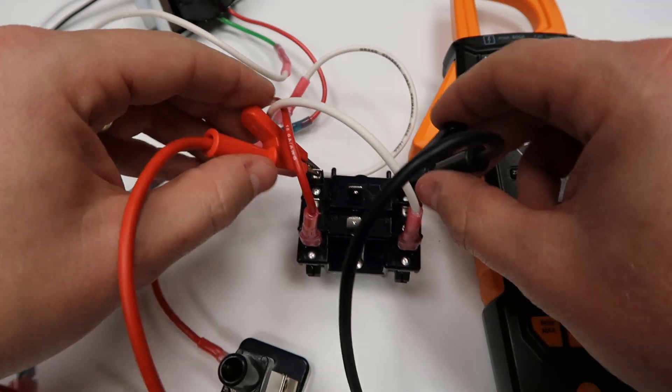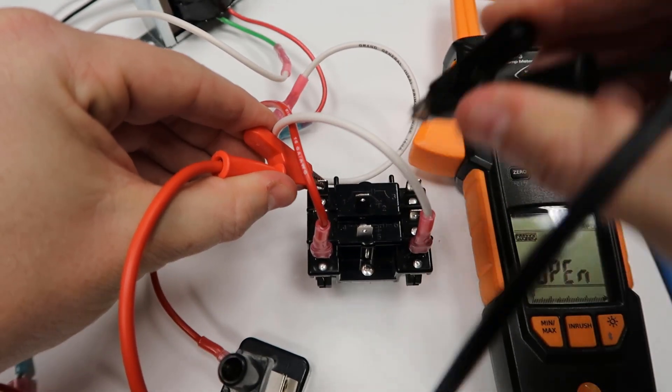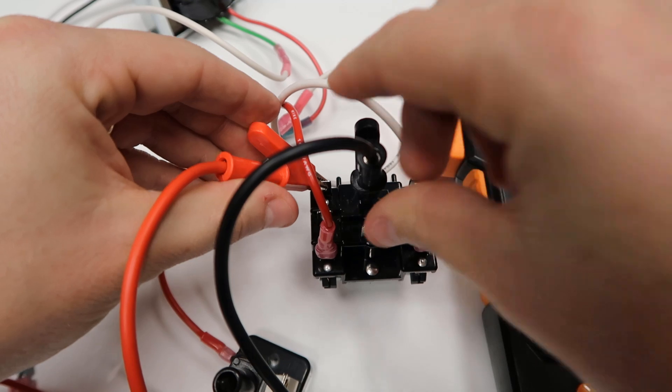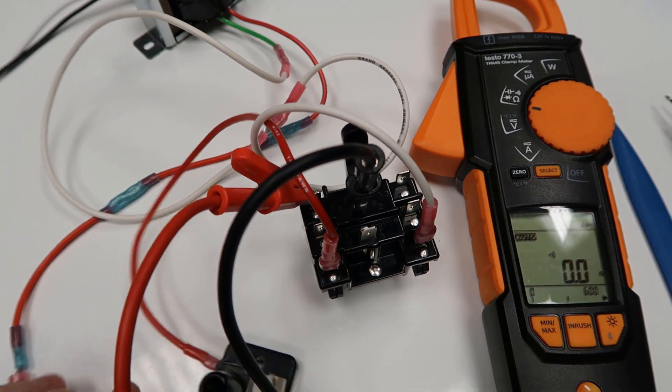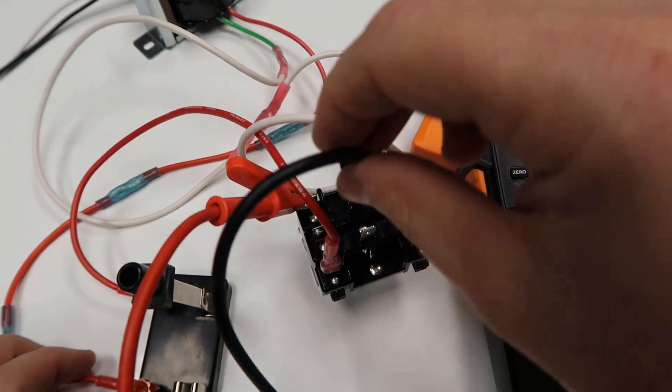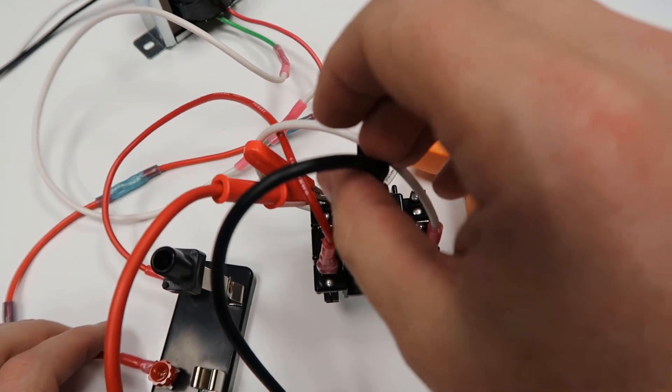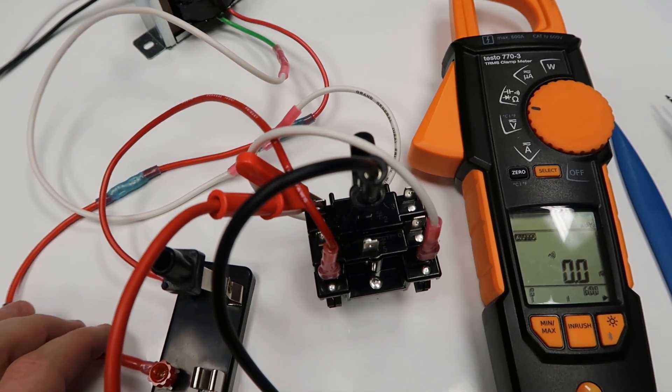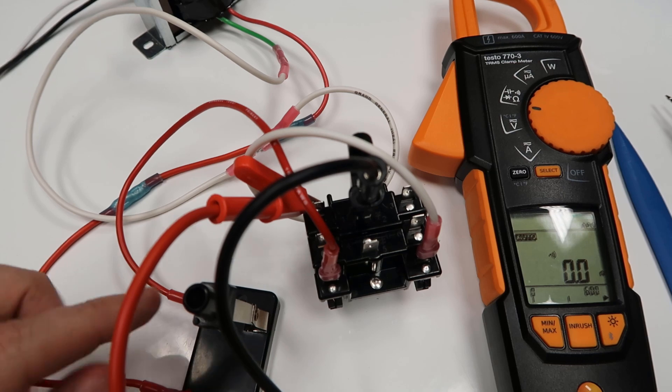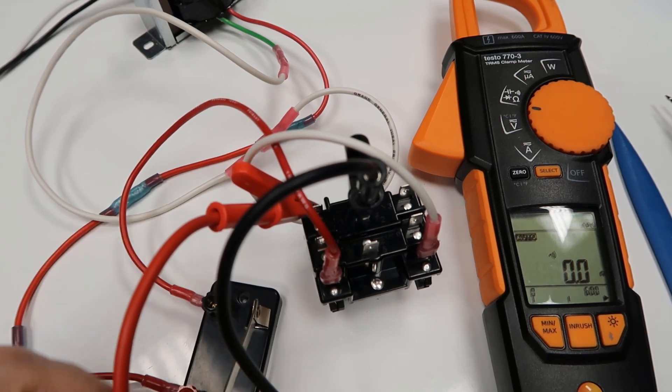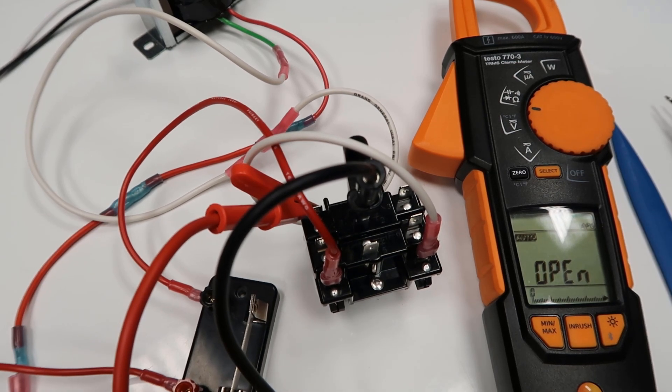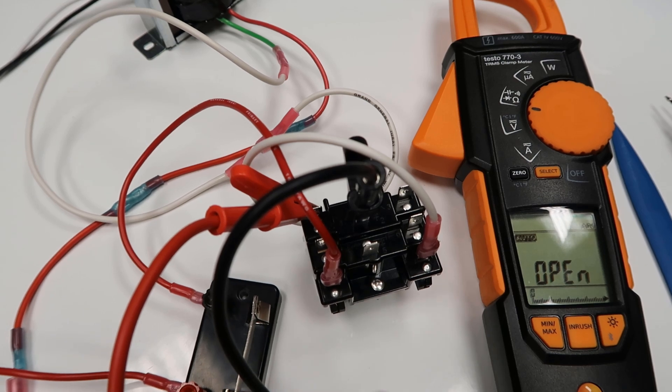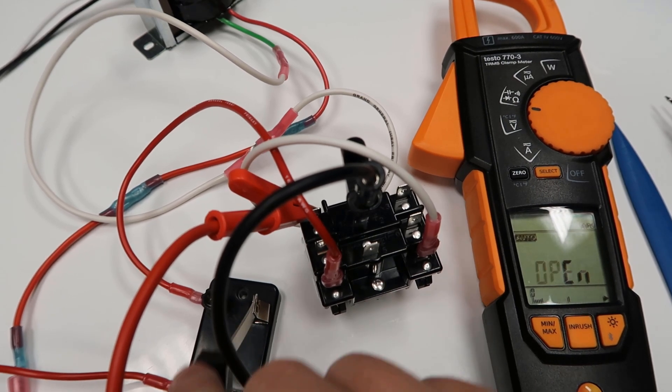The opposite is true. If I go between one and two, it's normally closed. When I don't have 24 volts of potential applied across the coil, then it has made a circuit. So there is a connection, and then as soon as I energize it, it breaks the connection. So it was normally closed, and it goes open when I power the coil at 24 volts.